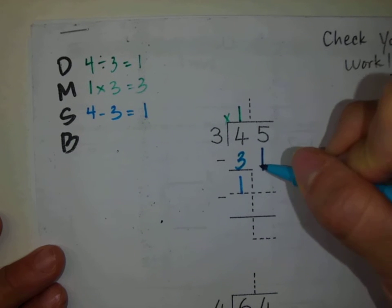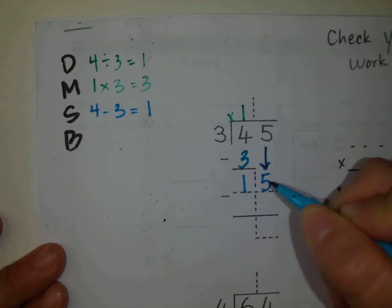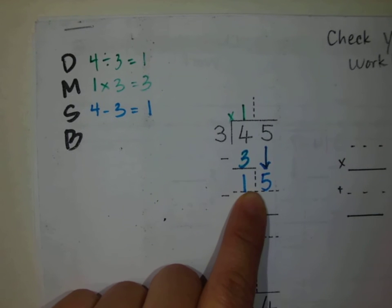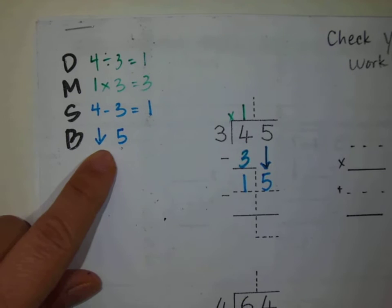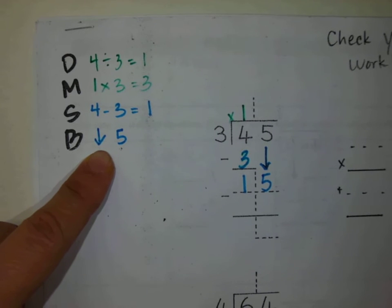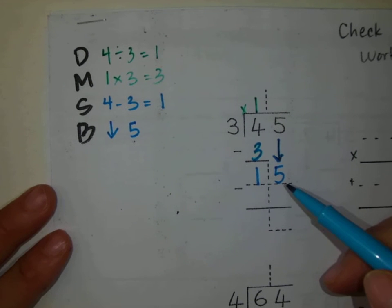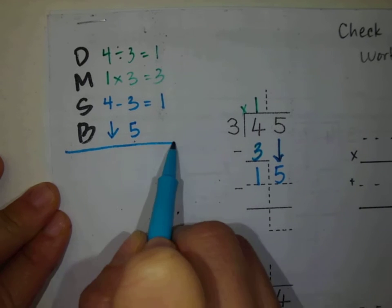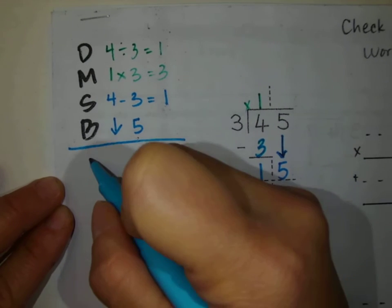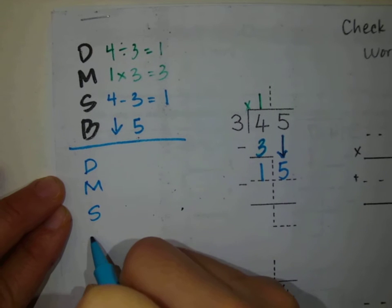The next step is brother bring down. I'm going to bring down this 5, which now changes this number into 15. I'm going to show that I brought down that 5. And then we are going to repeat — I'm going to draw a line there and repeat my steps: D, M, S, B.